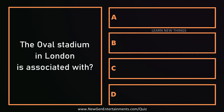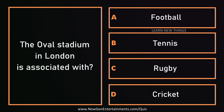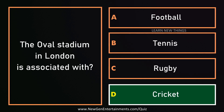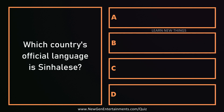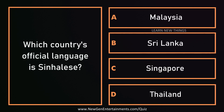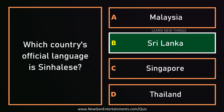The Oval Stadium in London is associated with? Cricket. Which country's official language is Sinhalese? Sri Lanka.